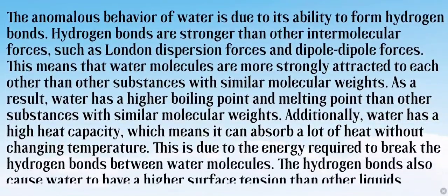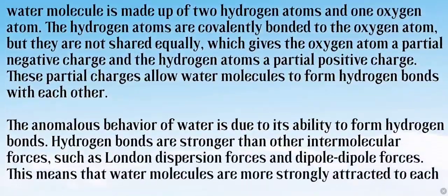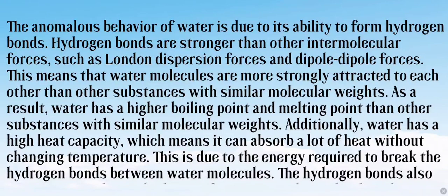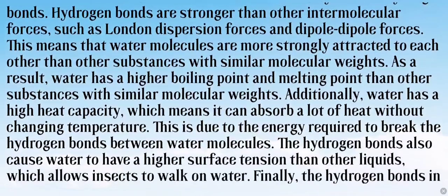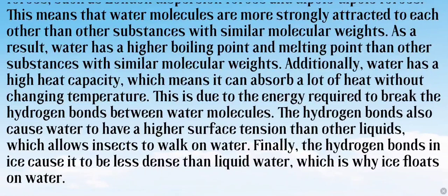Now the second part of this question: explain the anomalous behavior of water due to hydrogen bonding. The anomalous behavior of water is due to its ability to form hydrogen bonds. Hydrogen bonds are stronger than other intermolecular forces such as London dispersion forces or dipole-dipole forces. This means water molecules are more strongly attracted to each other than molecules of other substances with similar molecular weight. As a result, water has a higher boiling point and melting point, and a higher heat capacity — it can absorb a lot of heat without changing temperature.